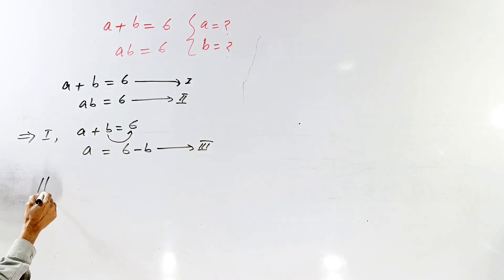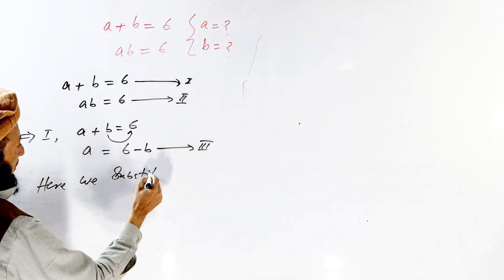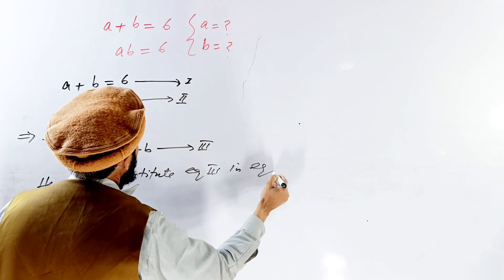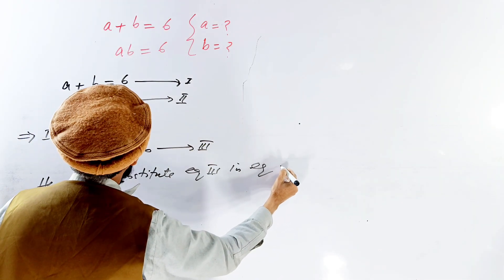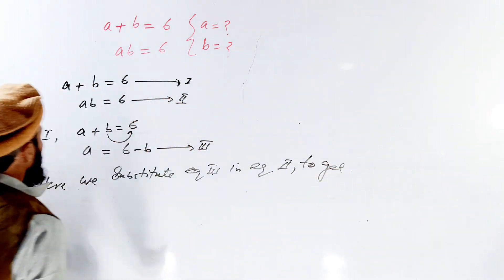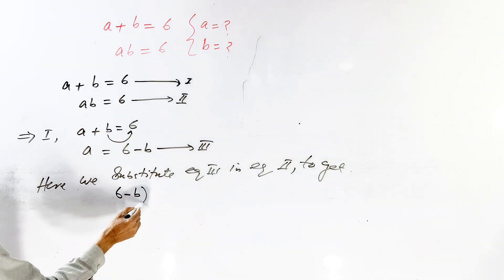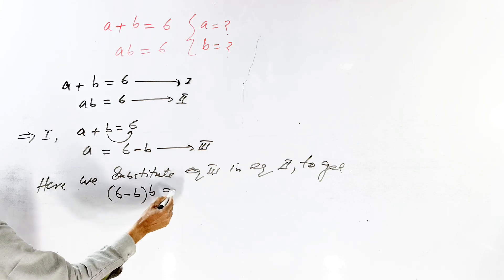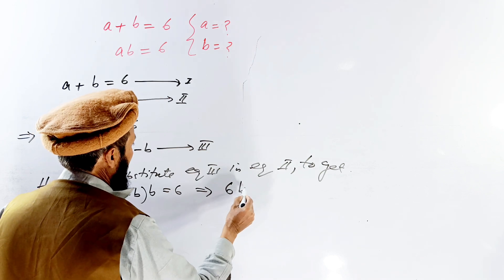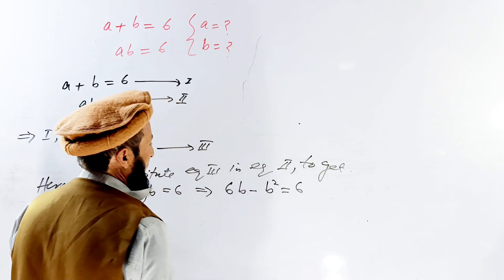We substitute equation three into equation number two. In the place of A we put 6 minus B. So we have (6 minus B) times B is equal to 6. If we multiply this out, we get 6B minus B squared is equal to 6.